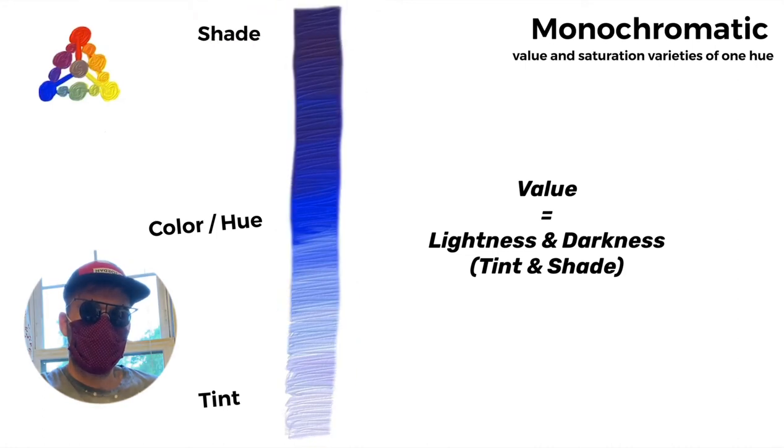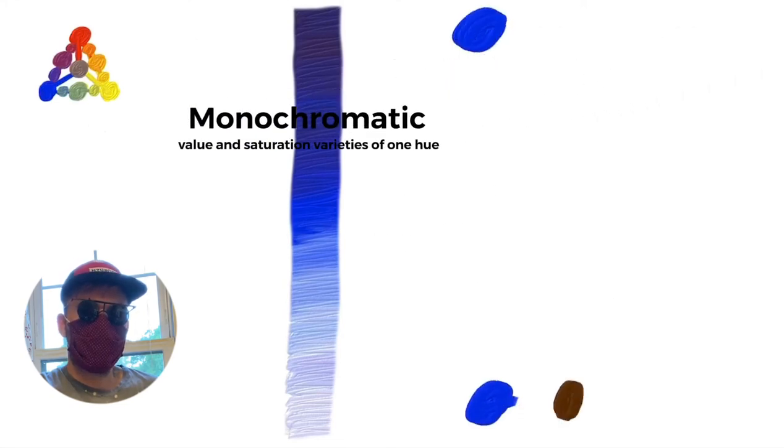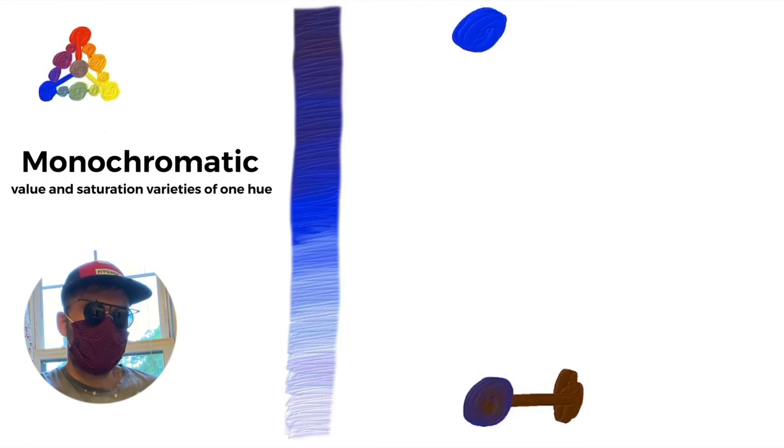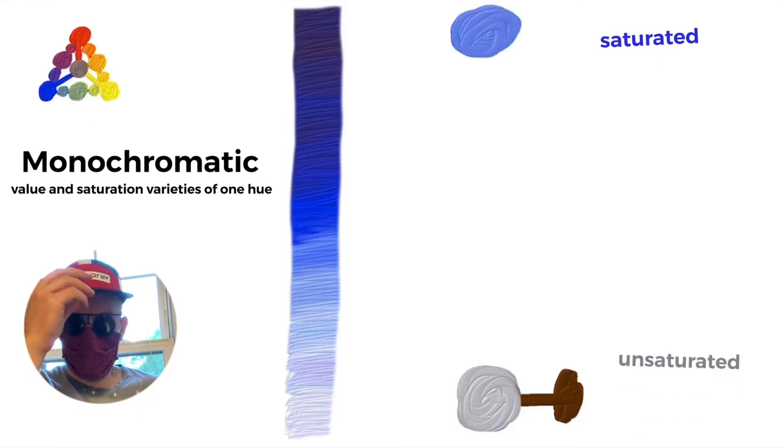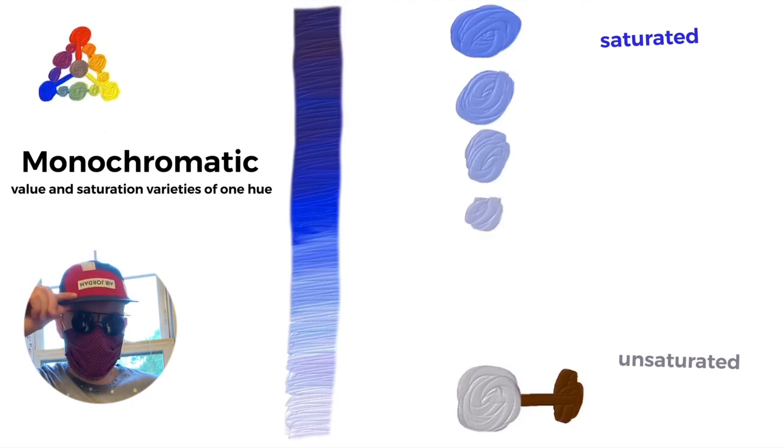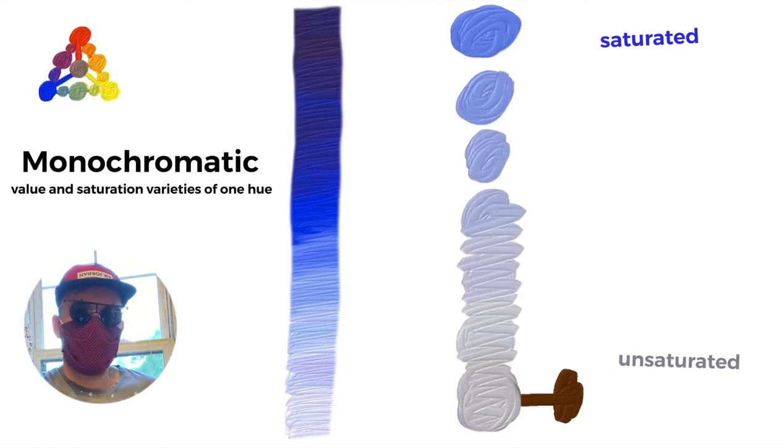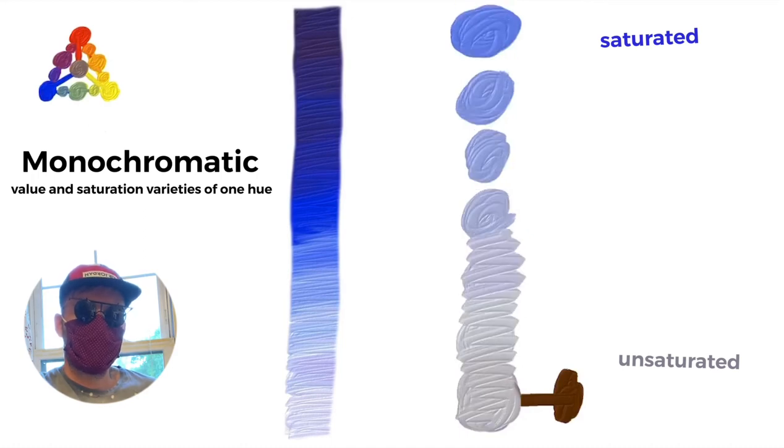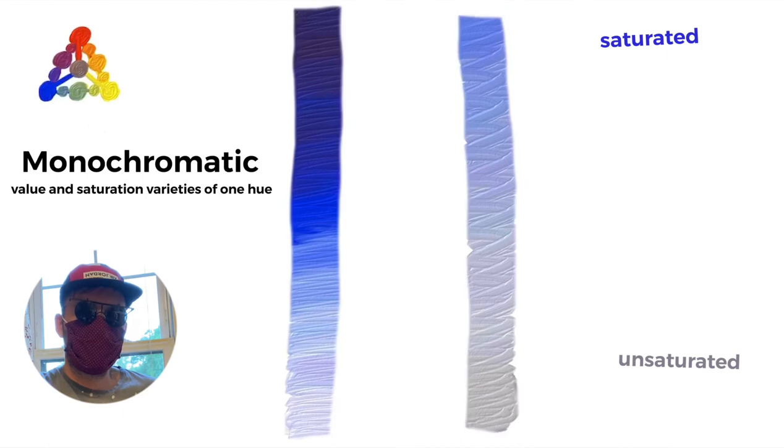Here's another gradation I want to talk about. It's also dealing with just ultramarine blue, so in a sense it is still monochromatic. But this is dealing with saturation level. Saturation refers to the intensity of the hue, the brilliance of it, how dull it is or isn't. And this is going from saturated to unsaturated. It's going from color to tone, from brilliant to dull. It's becoming gray. It's monochromatic. It deals with value structure, but it can also deal with saturation level.